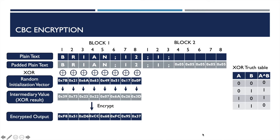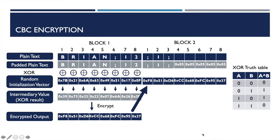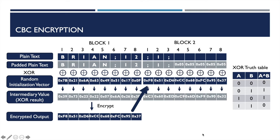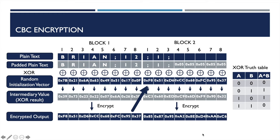So far, we are done with the first block, and let's move on to the second one. Here, we don't need to generate a random initialization vector again. Instead, we will be using the encrypted output of our first block and XOR it with the padded plain text of the second block to generate the intermediary value, and then encrypt it to have the ciphertext output. Make sure you understand how the encryption works, because this is the key to our exploration.